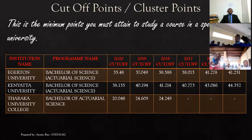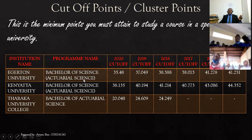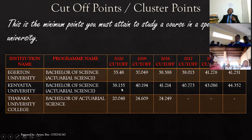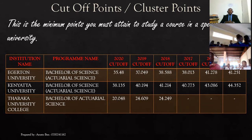It is necessary for you to know the cut-off range — not necessarily the specific cut-off point, but the range. If you look at the trend of Egerton University for Bachelor of Science in Actuarial Science: it was 35.48 in 2020, 37.04 in 2019, and 38.5 in 2018. This tells you that in 2021 you should not be eyeing anything less than 35.48 — it should be above that. The same applies at Kenyatta University and Dedan Kimathi University College.